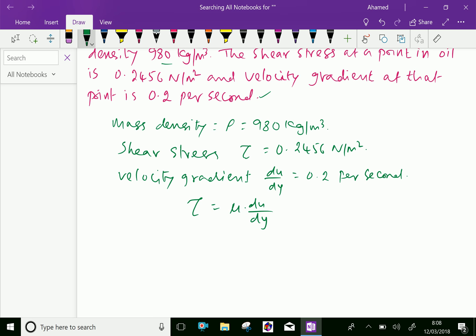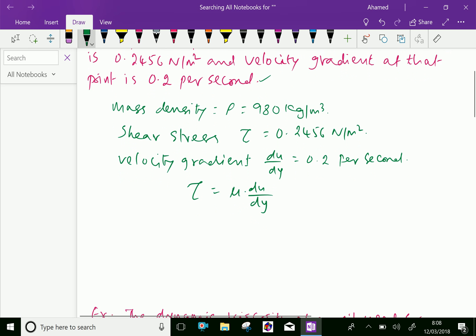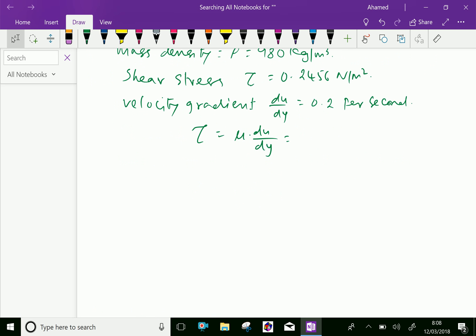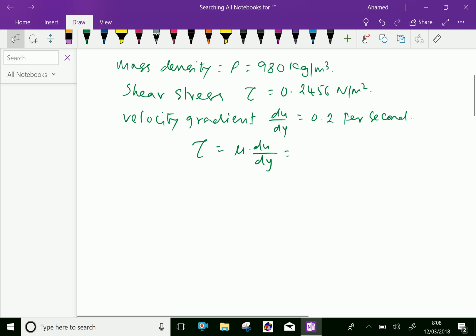Now, which is equal, that is given that du by dy is 0.2456 into μ.